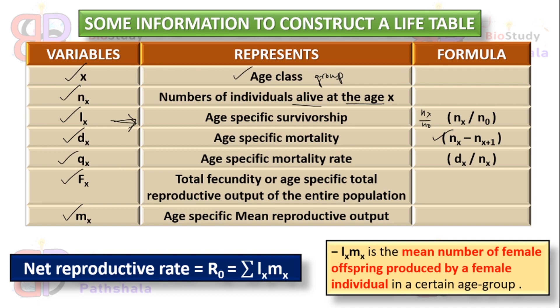qx is the age-specific mortality rate, calculated as the age-specific mortality divided by the number of individuals alive at age x, so it is dx divided by nx. fx is the total fecundity or the age-specific total reproductive output of the entire population. mx is the age-specific mean reproductive output.